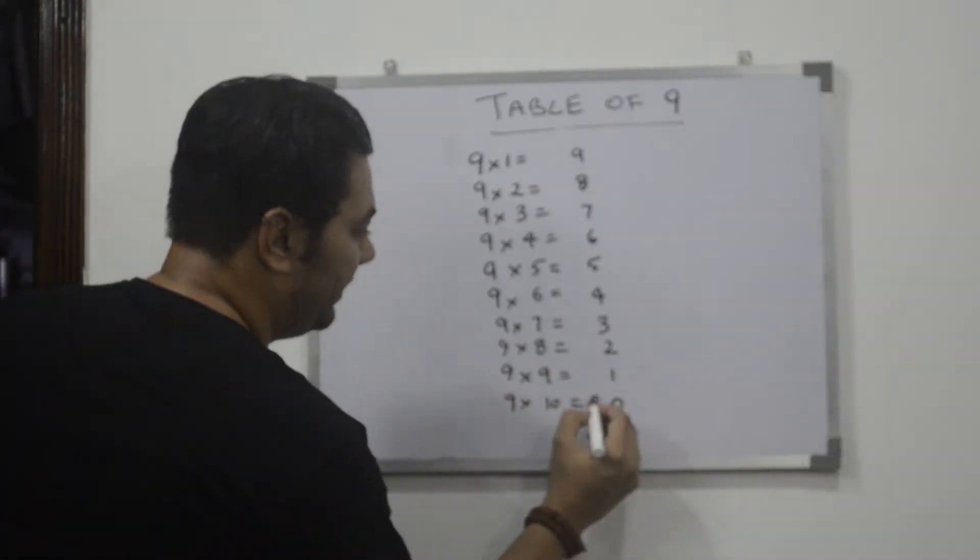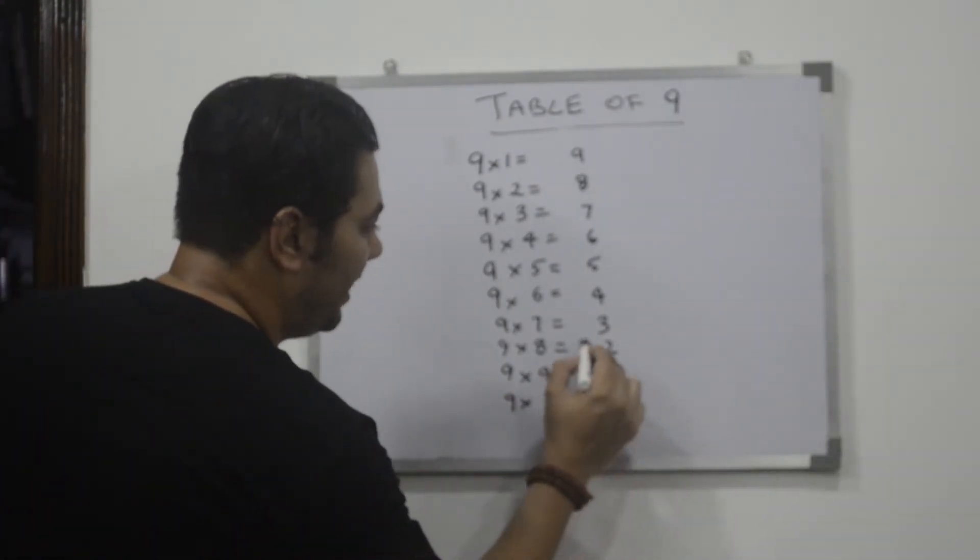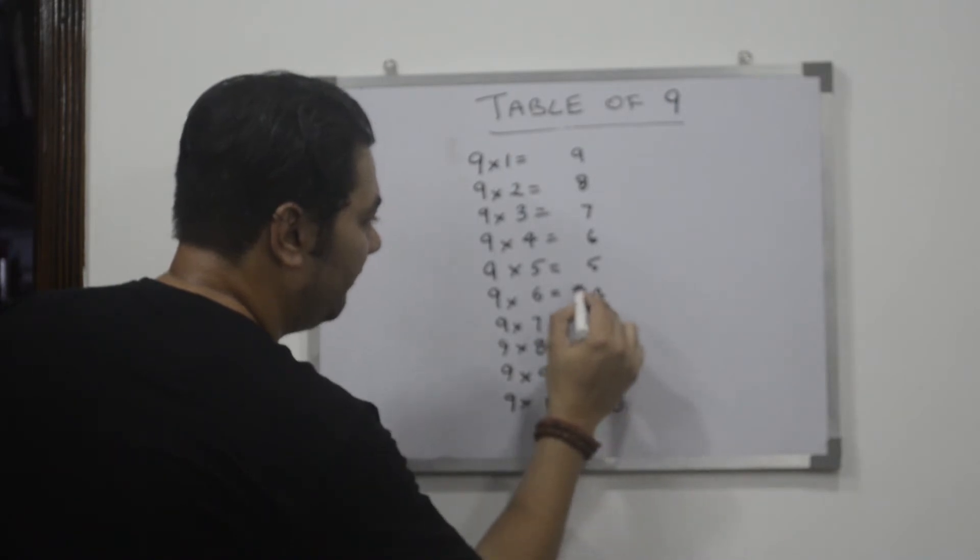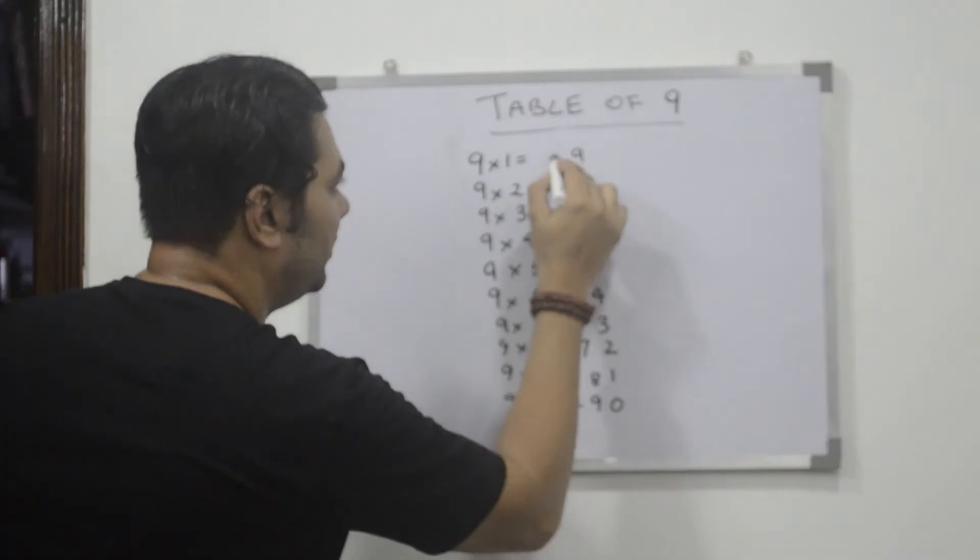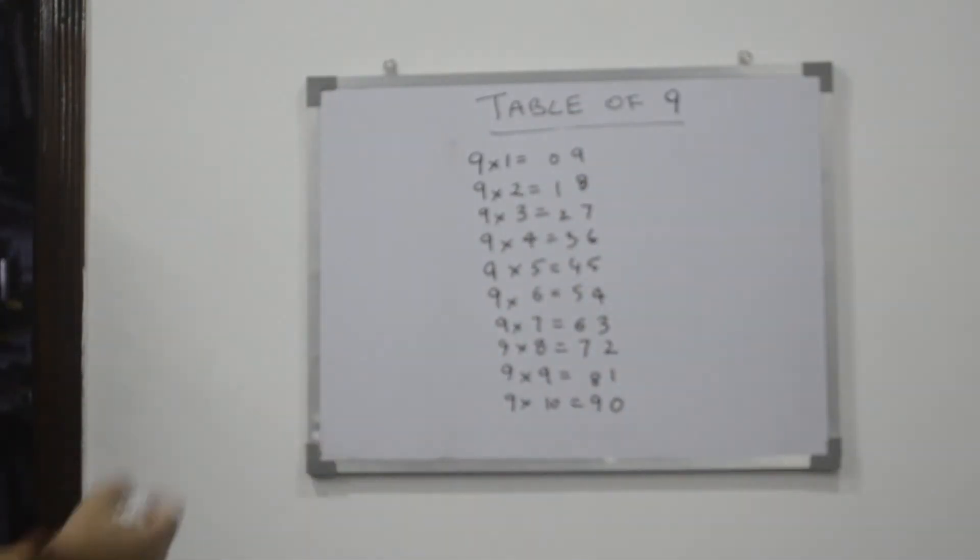Same. Eight, seven, six, five, four, three, two, one, zero.